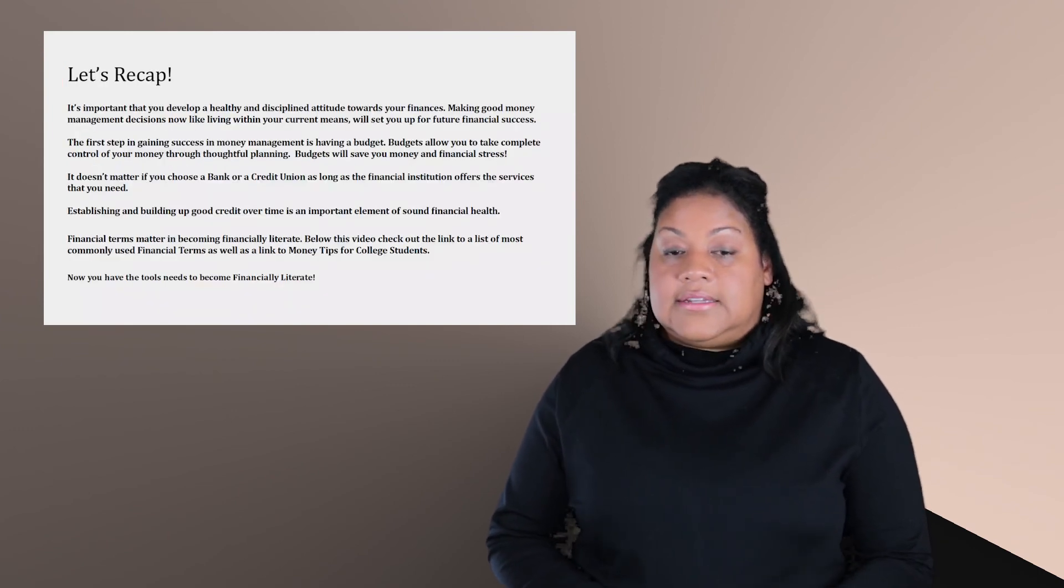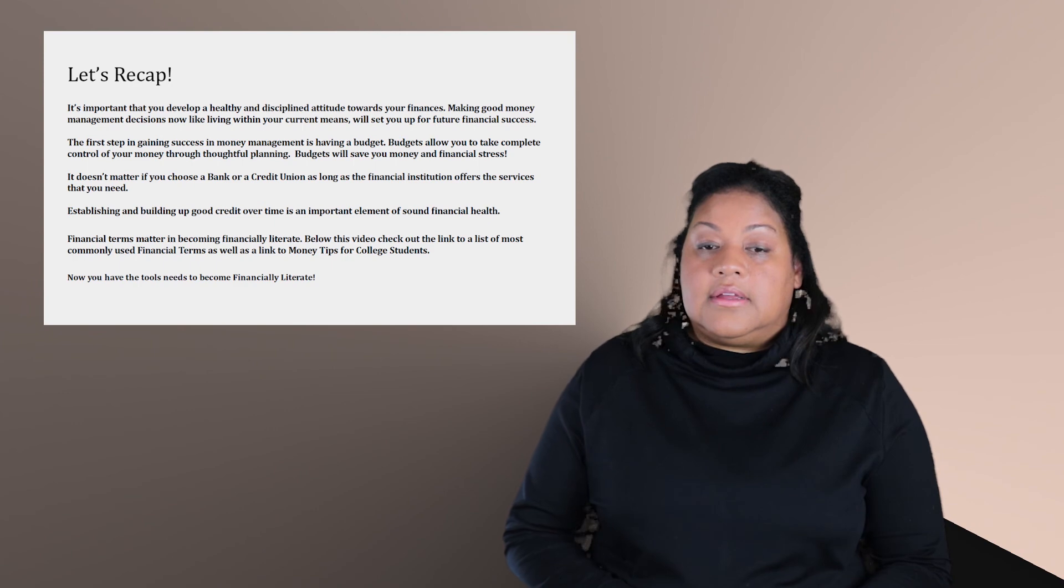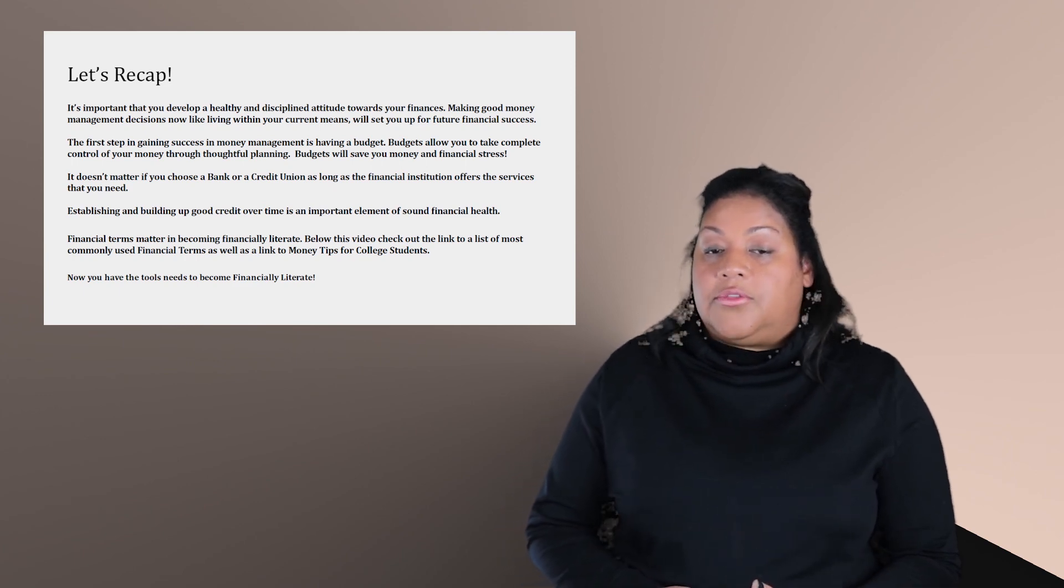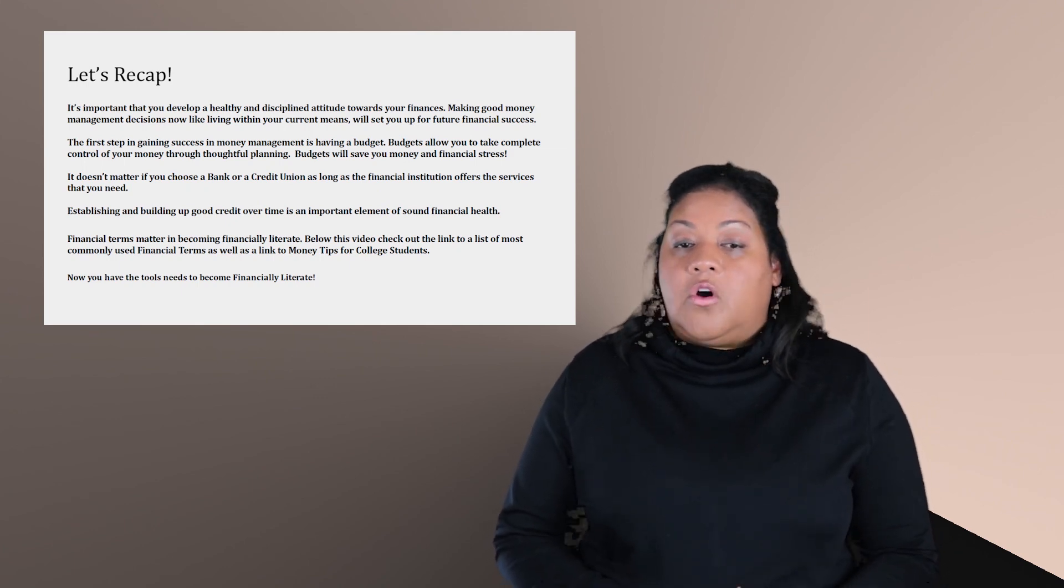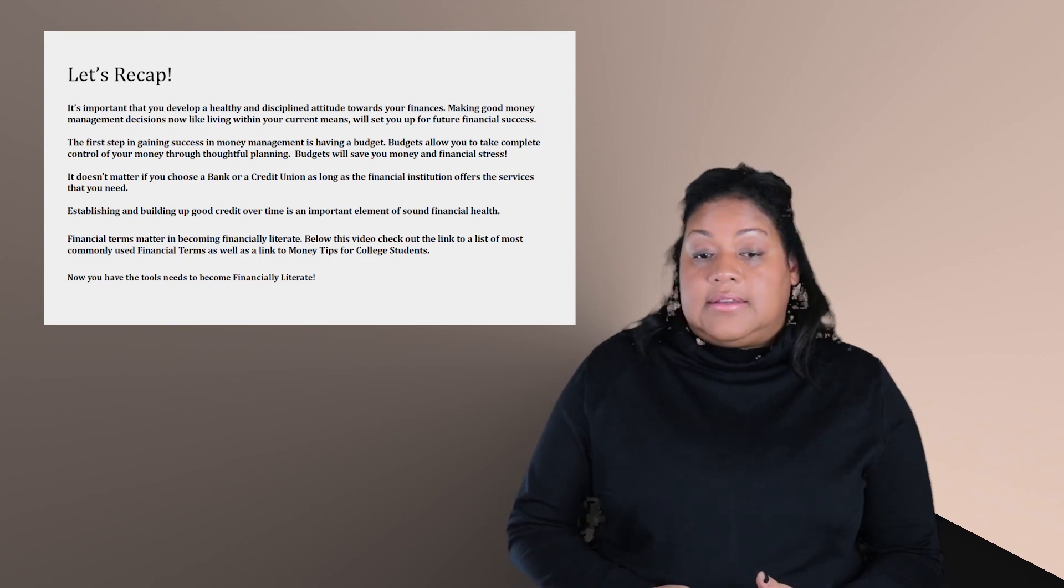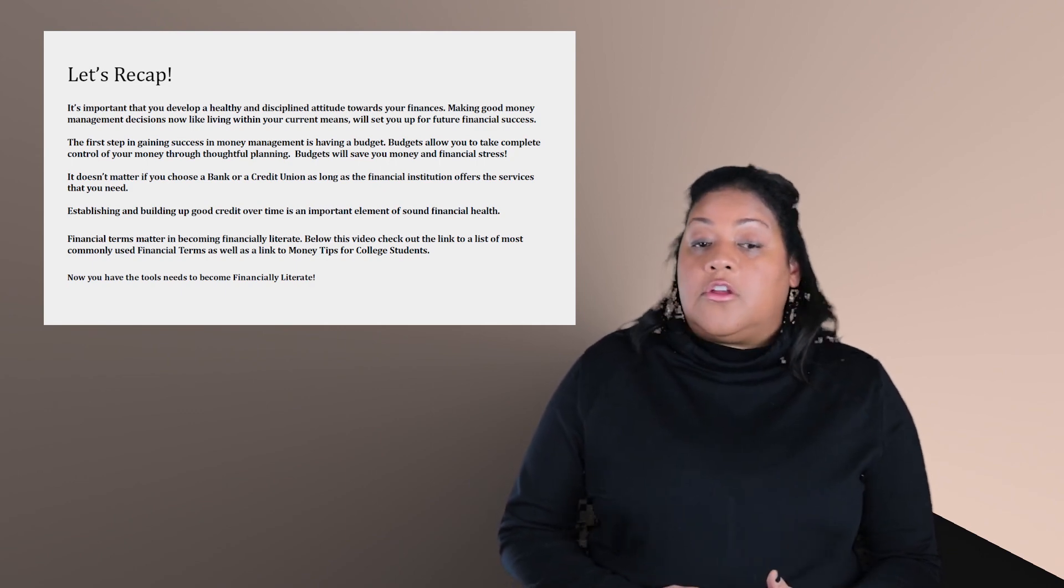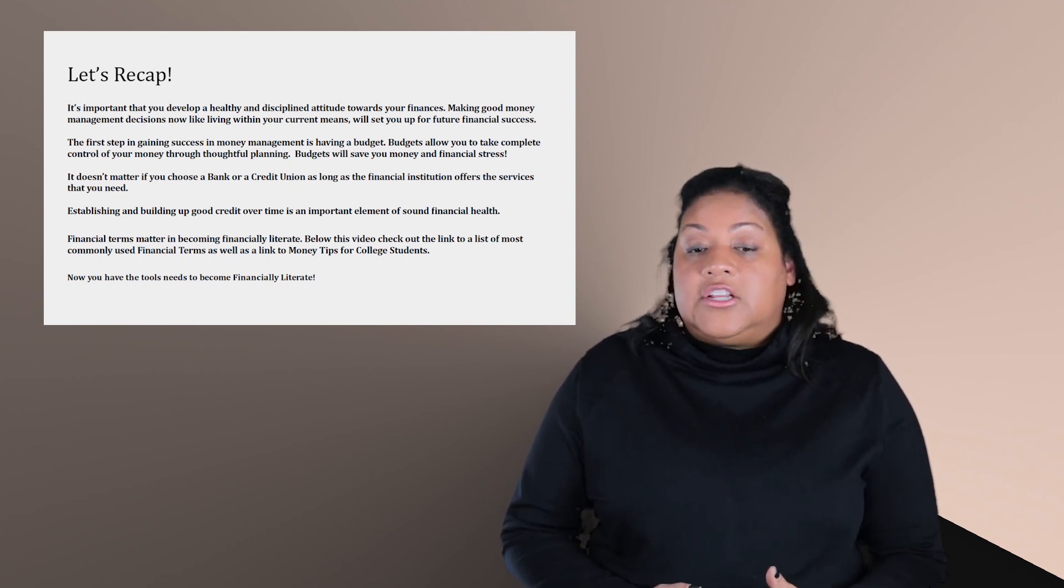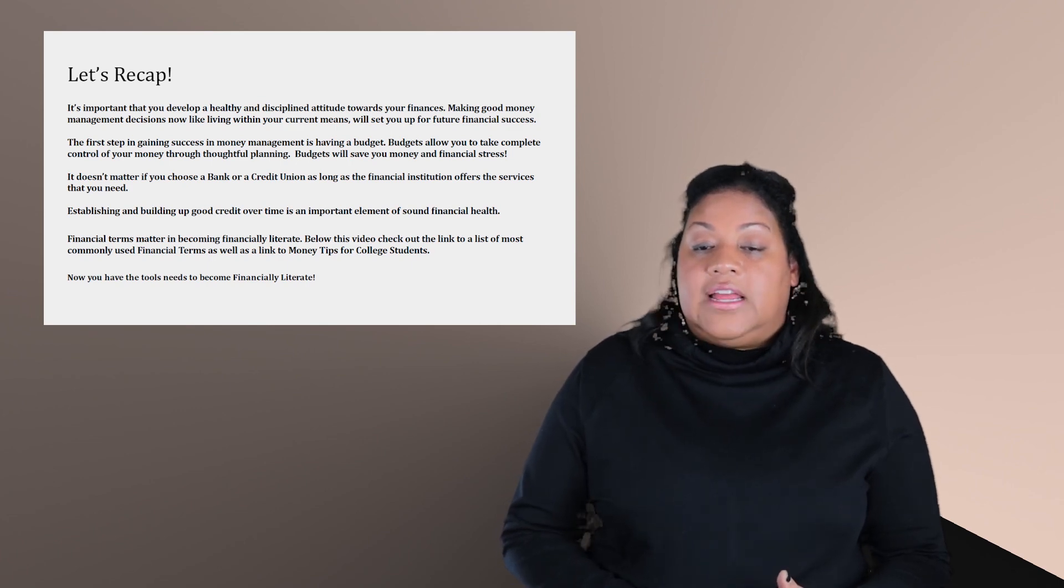And with a recap of today's lesson, you want to make sure and remember it's important to develop a healthy discipline attitude towards your finances. The first step that you should take is always establish a budget for yourself. As a budget allows you to take complete control of your money through thoughtful planning. Budgets will save you money and financial stress. Doesn't matter if you go with a credit union or a bank for your financial services. Make sure you find the one that serves the needs that you need to have met. And also, it's important that you make sure that you're aware of your management of your money and you plan accordingly so you don't get into financial pitfalls and stressful situations and perhaps even establishing bad credit. Now you have the tools needed to become financially literate.